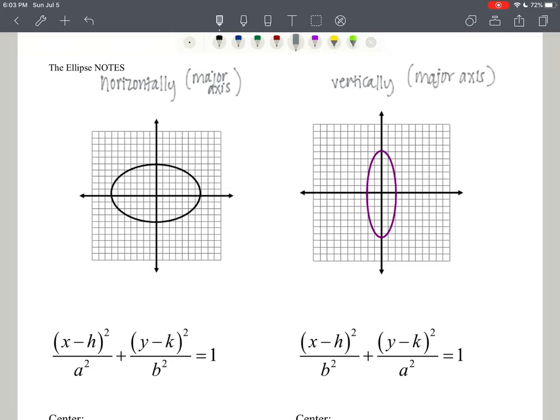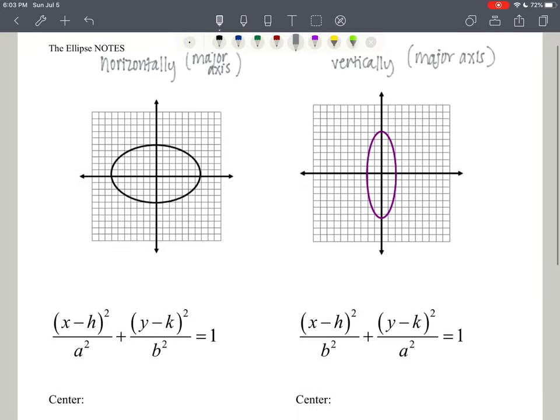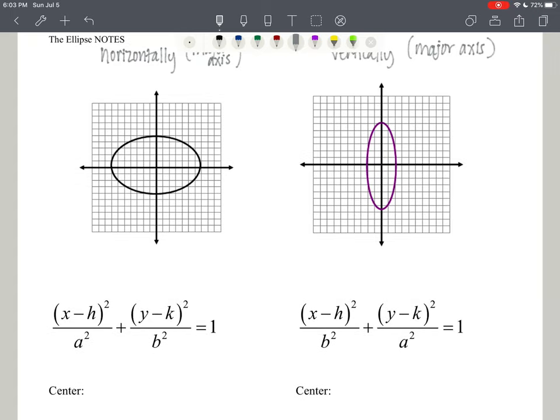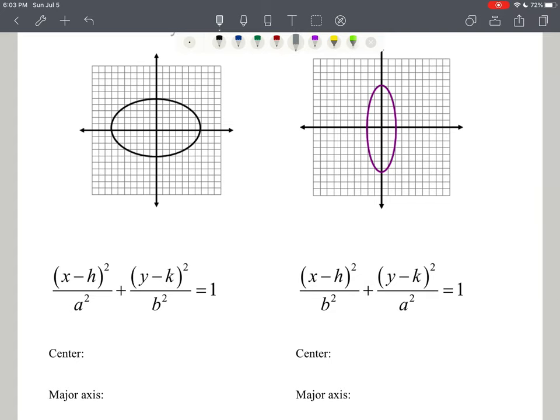We'll talk first about the horizontal axis being the major axis. We have an equation in its general form: (x - h)² / a² + (y - k)² / b² = 1. This part's really important—the fact that it's equal to 1 must be equal to 1.